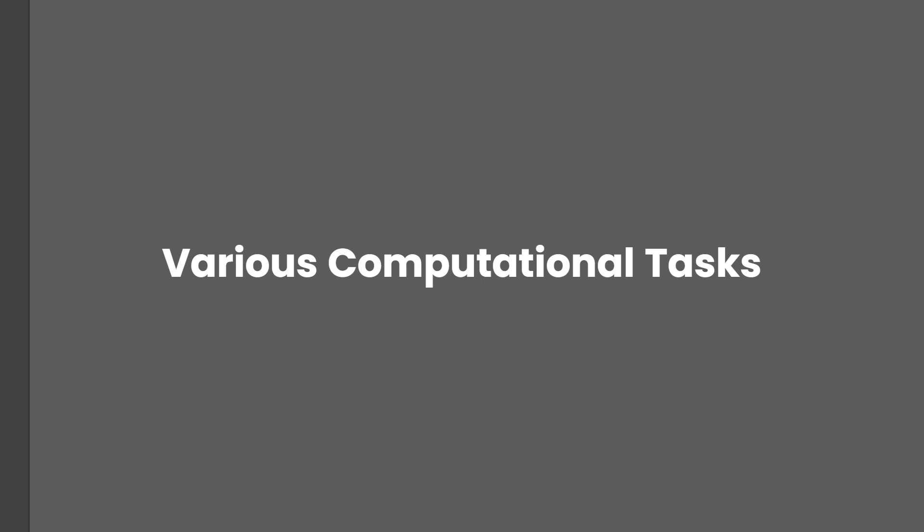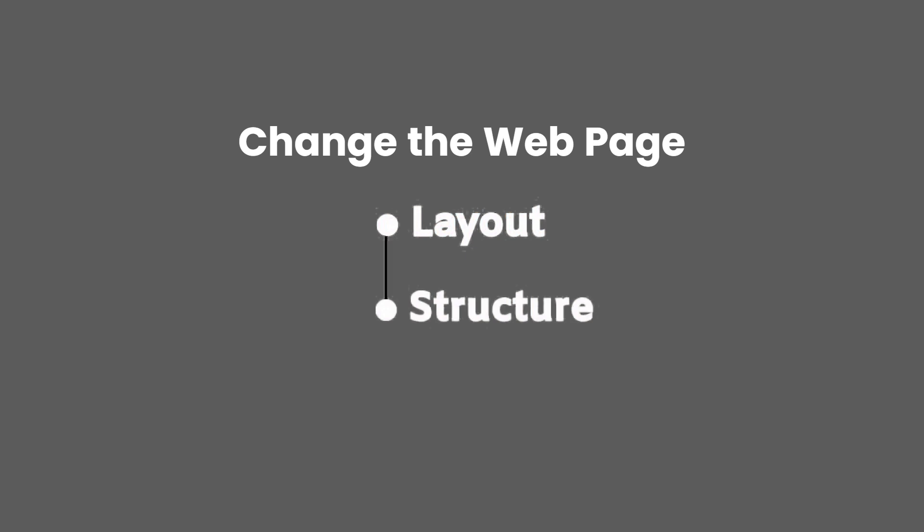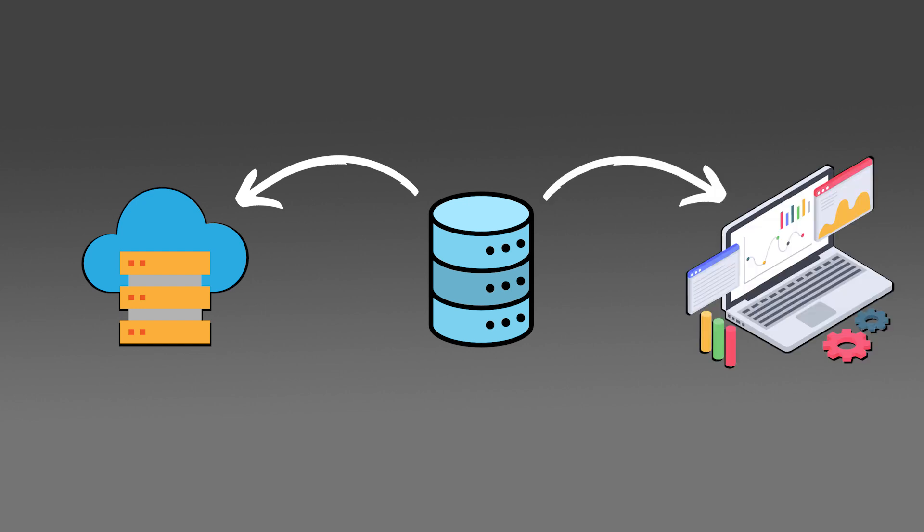Once you're done with HTML and CSS, comes JavaScript. JavaScript plays a very vital role in the full-stack development stack — it can be used for both front-end and back-end development. On the front-end, once you have a web page created using HTML and CSS, you can make it interactive using JavaScript. You can do various computational tasks, perform validations on HTML forms, make changes to the web page layout or colors based on user events like click or hover, and even use JavaScript to get data from the server to display on web pages.